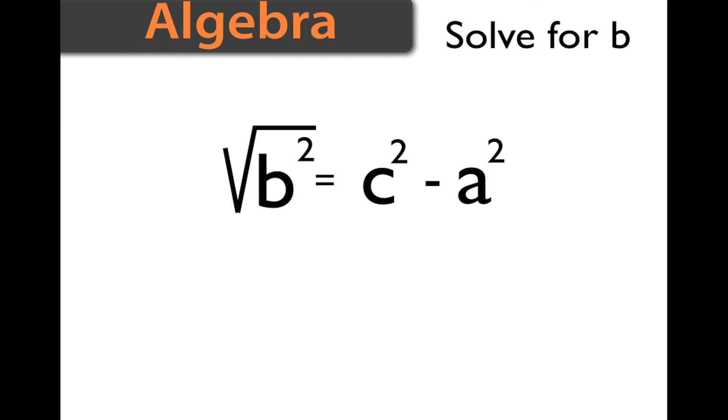So we put a square root over b². We now put a square root over the entire right side. Remember, we put it over the entire left side, so we have to put it over the entire right side. We take the square root of a square and it leaves us with our final answer.